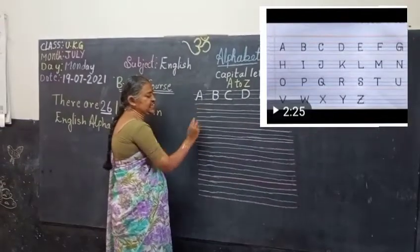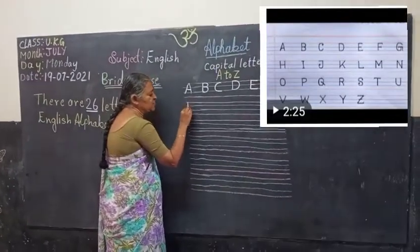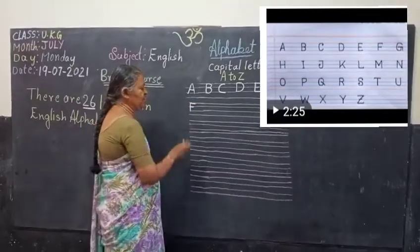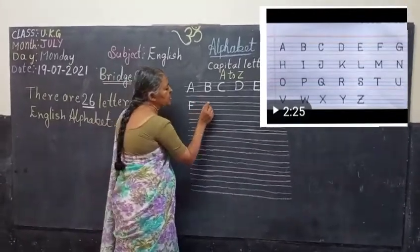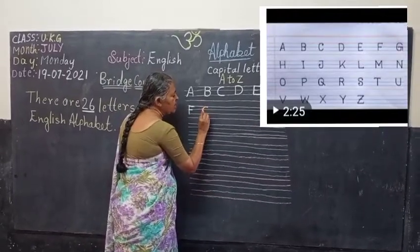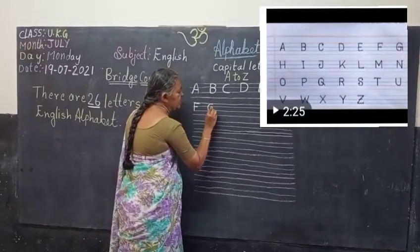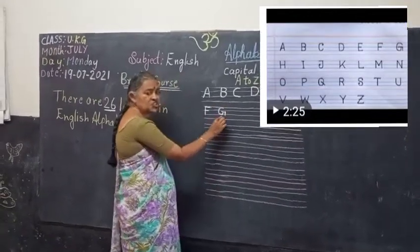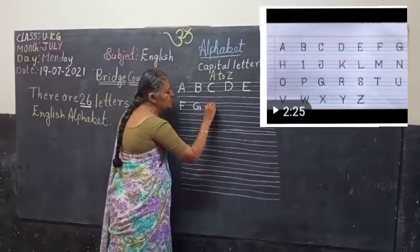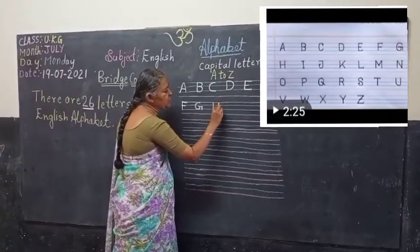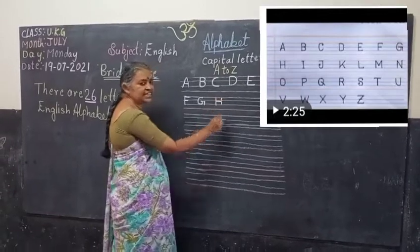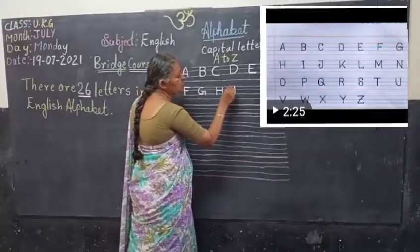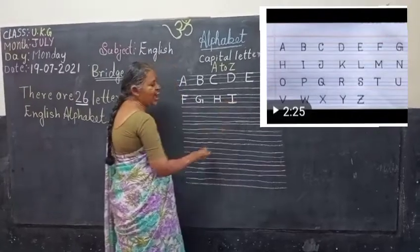For F: strike line and two sleeping lines — that is F. Next, curve and go back, then do the sleeping line and come down — that is G. Strike line, two strike lines and one sleeping line — that is H. Strike line, two sleeping lines — that is I.